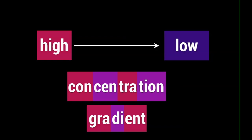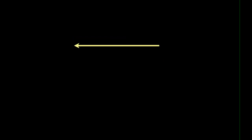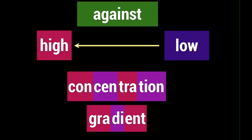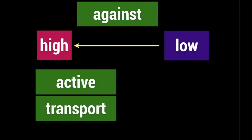And just like diffusion, it travels from a place of high concentration to a place of low concentration. So what's it called when something goes from a low concentration to a high concentration? That is called going against the concentration gradient. When you go against the concentration gradient, you have to use active transport.